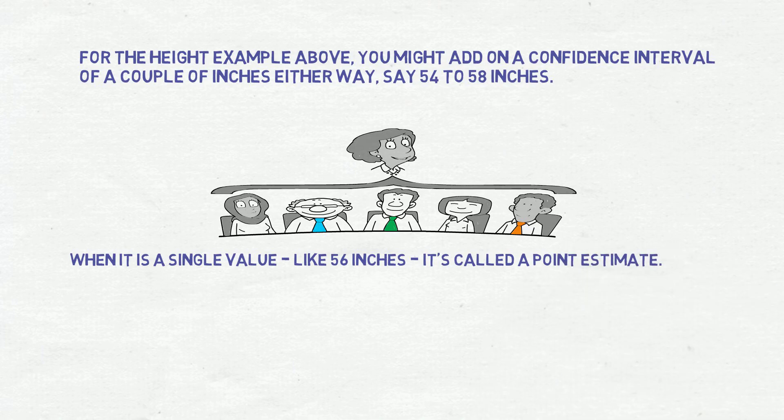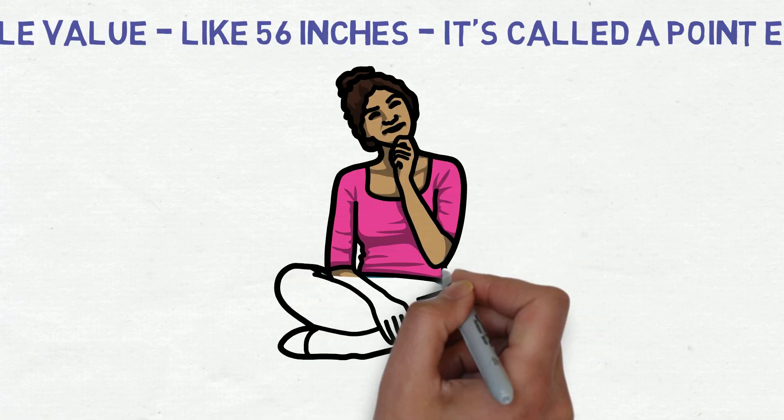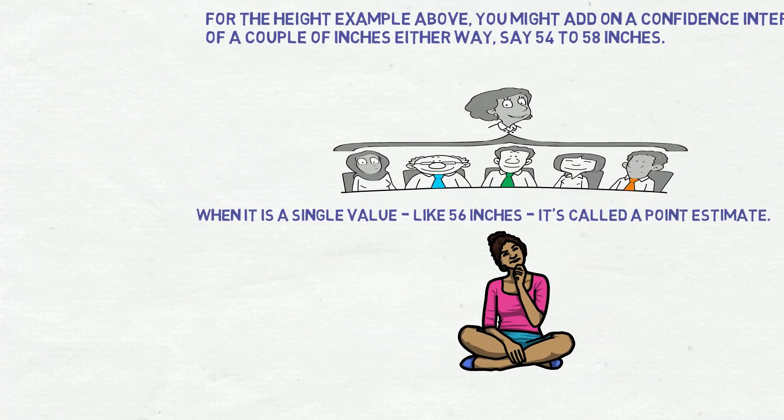Whereas if your estimate is a single value like 56 inches, then it is called a point estimate. I hope you got a clear idea. Thanks for watching.